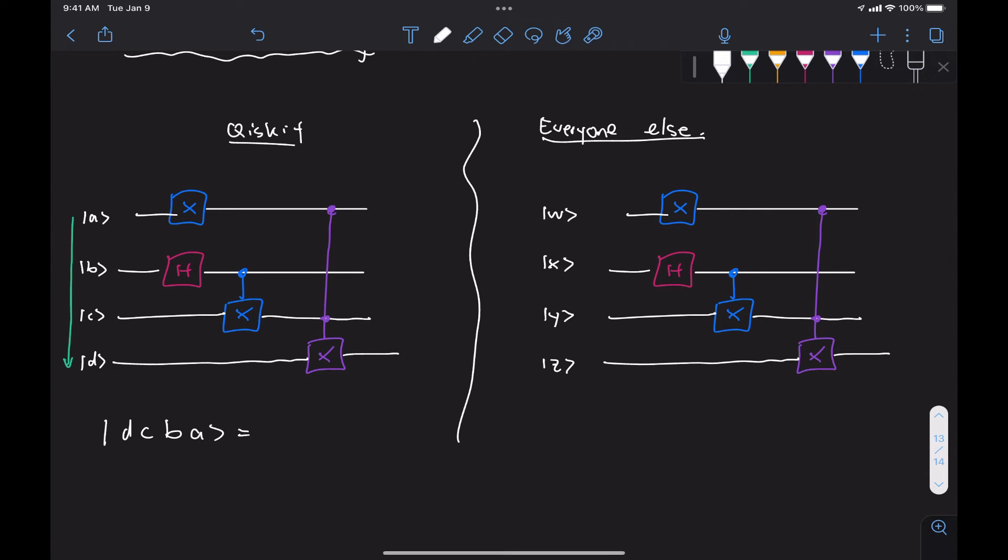Which is equivalent to having the state vector D tensored C tensored B tensored A, right? So as you can see here, the qubit that we have here on the top is now here on the right, and then you move from right to left when you're moving from top to bottom. And the way everybody else does this is if you're going from top to bottom, the way you organize this ket is actually from left to right. So you would have W, X, Y, and Z.